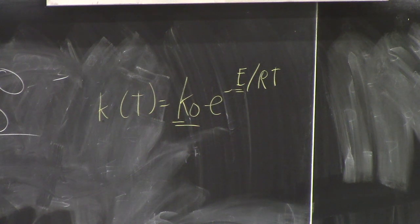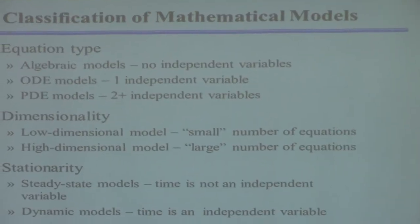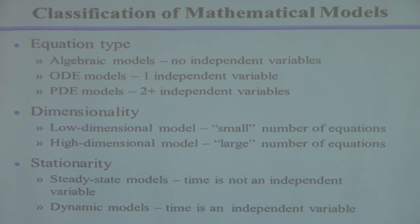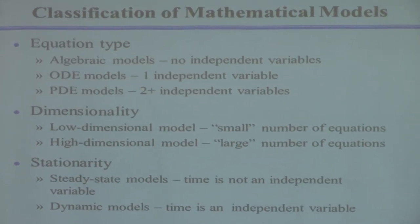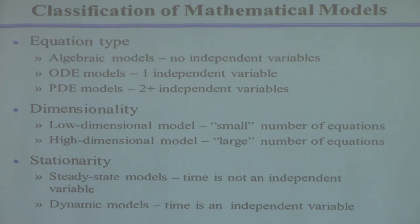In terms of classifying models, I'll go through different characteristics so we can get some common language. If I say something is an algebraic equation or algebraic model, it means it has no independent variables — time or space. As far as we're concerned, the independent variables are time and three spatial coordinates. If something is an algebraic equation it doesn't depend on any of those.